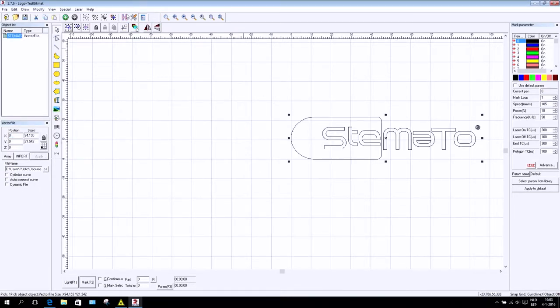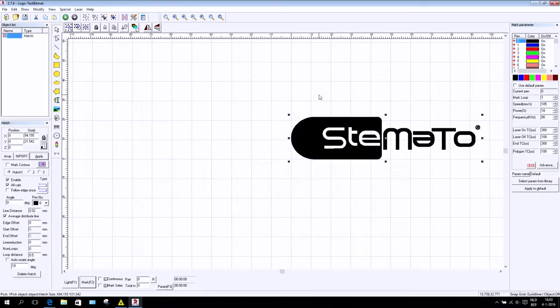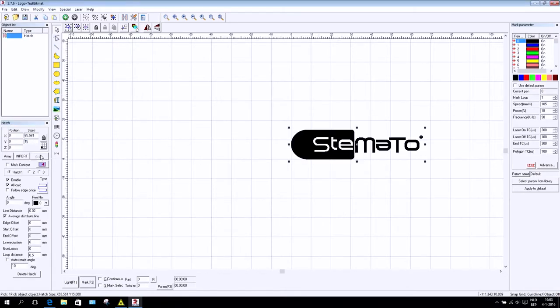Data matrix codes, 1D barcodes, free text, logos, and pictures can all be laser marked with the Besko Laser.